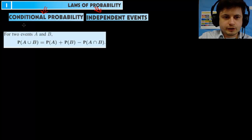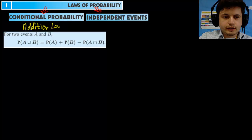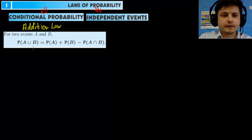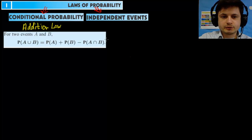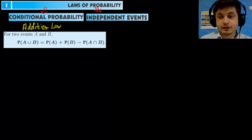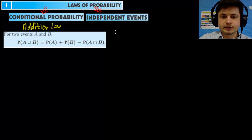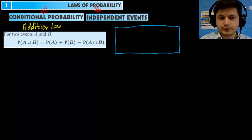The first formula is called the addition law or probability addition law. What it says is: if you have two events A and B, the probability of having A or B equals the probability of A plus the probability of B minus the probability of A and B. Let's look at this as a Venn diagram to make it a little more clear and explain why it works this way.